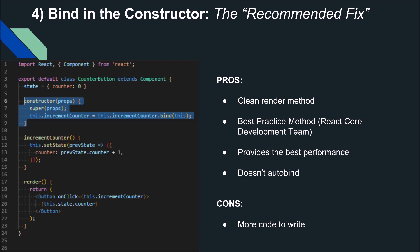The con of this approach is you end up writing more code — especially if you didn't already have a constructor, you have to add the whole constructor method. But you get used to it and it becomes second nature. If you did already have a constructor, you just add that one line. There's nothing wrong with the previous methods in terms of getting it working, but I recommend following a consistent code style in your project. I definitely recommend this method because it's documented best practices and will give you the best performance as you scale.